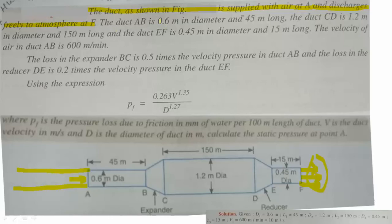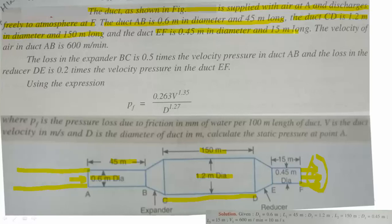The duct AB is 0.6 meter in diameter and 45 meter long. The duct CD is 1.2 meter in diameter and 150 meter long. The duct EF is 0.45 meter in diameter and 15 meter long. The velocity of air in duct AB is 600 meters per minute.